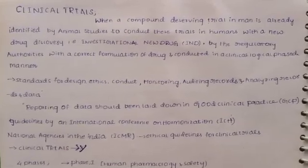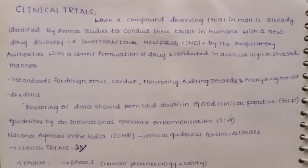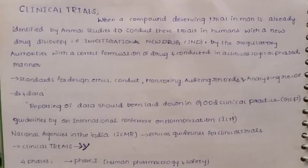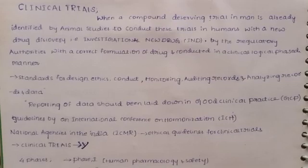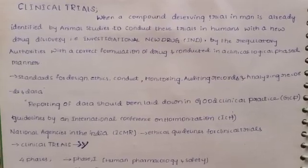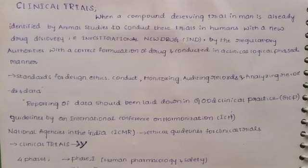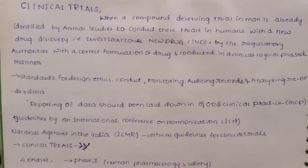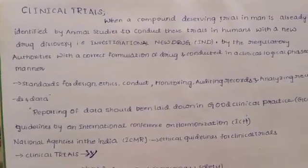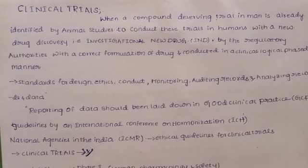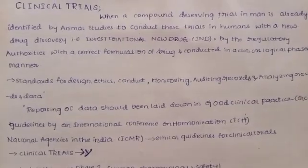When a compound deserving trial in man is already identified by animal studies, we conduct these trials in humans with a new drug discovery — that is, the investigational new drug — approved by regulatory authorities with a correct formulation of the drug, conducted in a clinically logical phased manner. Animal studies are already done; now we will test in humans.